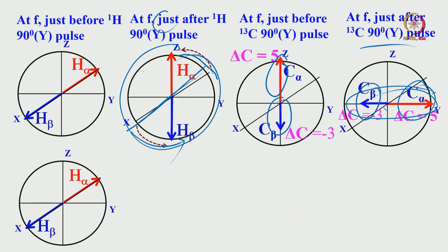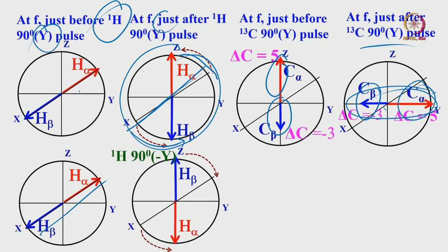This is one experiment with a 90 degree plus-y pulse. What happens if you do the identical experiment with a proton pulse of 90 degree minus-y? When you apply 90 degree minus-y, in the previous case H-alpha was along the z-axis and H-beta was along the minus-z axis. Now they get reversed: H-beta is along the z-axis and H-alpha has come to the minus-z axis.